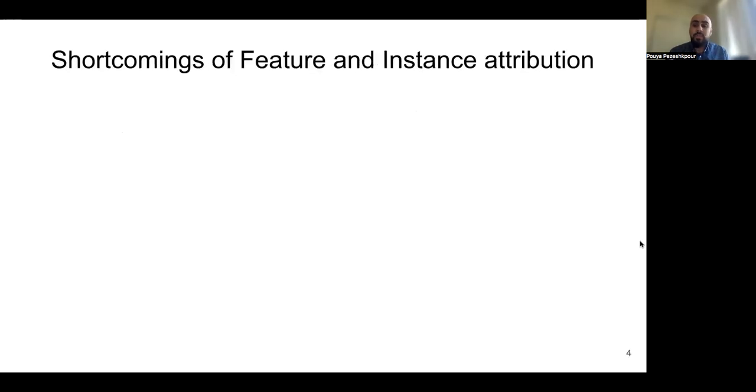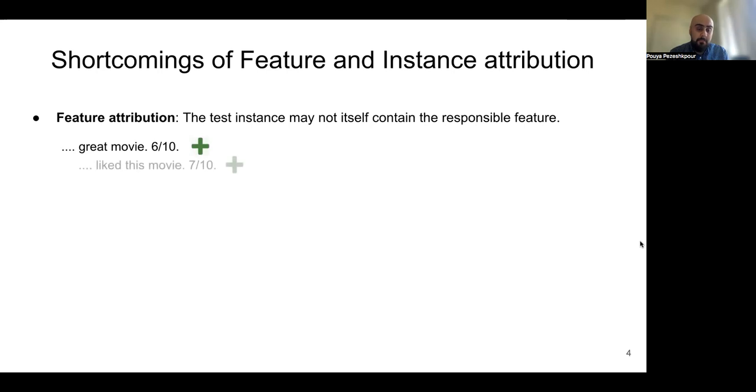But before jumping to actual artifact discovery, we first need to address some of the shortcoming of existing feature and instance attribution methods. We know a feature attribution explanation is limited to the features that is available in the target data. Consider this scenario, where your model is essentially a rating detector over IMDB reviews. So whenever we have a rating, model will predict the instance to be positive. And as soon as we don't see any rating in the reviews, model will be mispredicted as negative. So here, if you apply feature attribution, for example, saliency map, on top of this last instance, there is no way you can figure out what is wrong with the model.